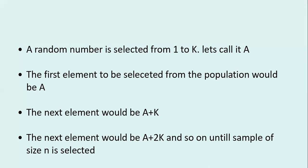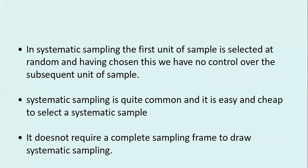I continue with A plus 3K, A plus 4K, and so on until my sample size of 50 shops is complete. This is how systematic sampling works. The first unit is selected by random sampling, but after that A+K, A+2K, A+3K, there is no additional randomness — the subsequent selections are determined until the sample is complete.